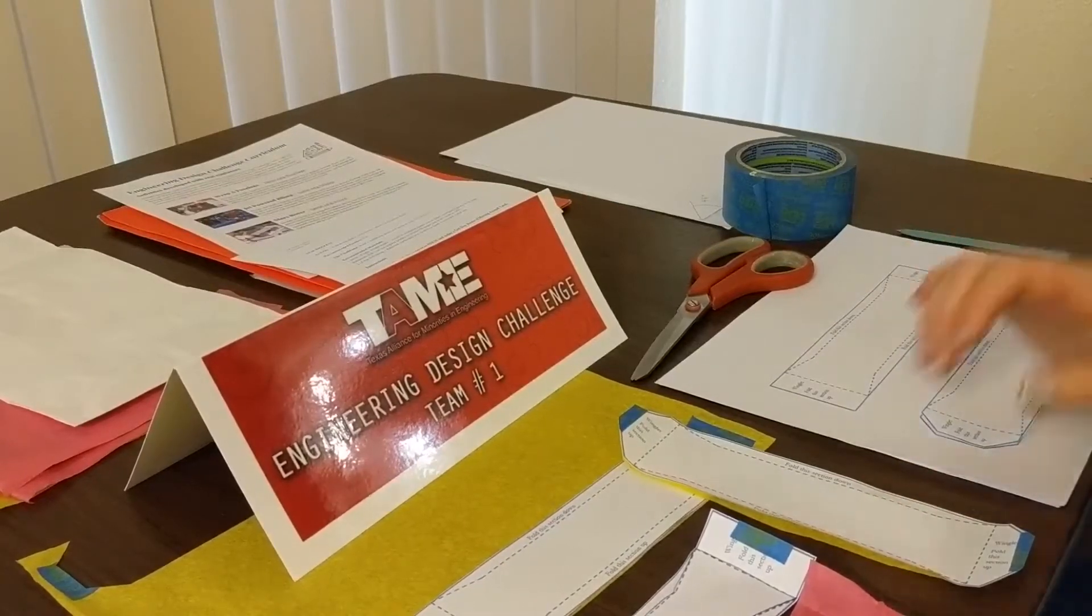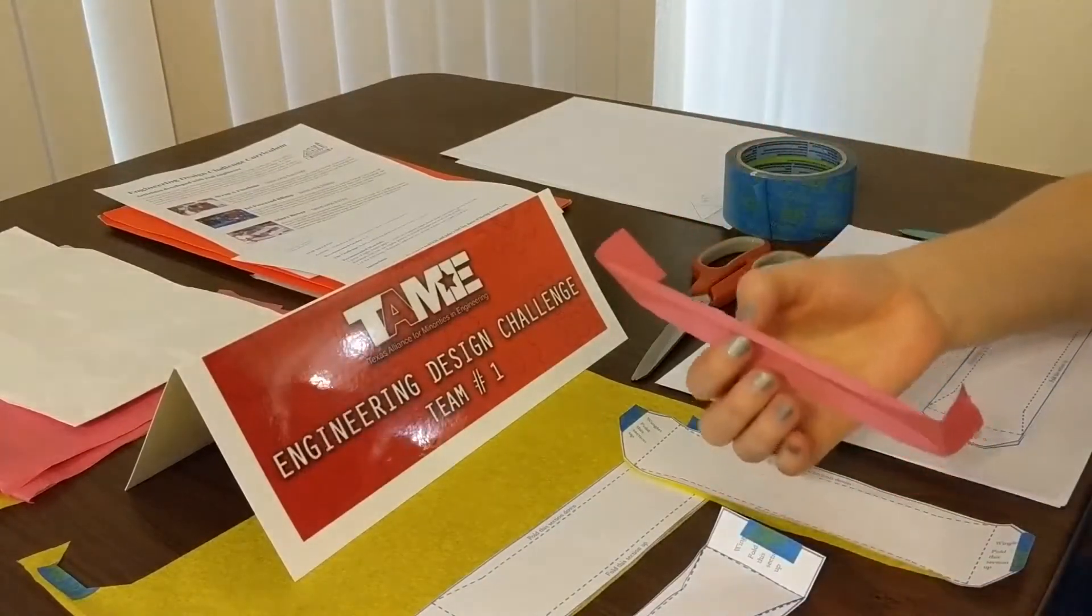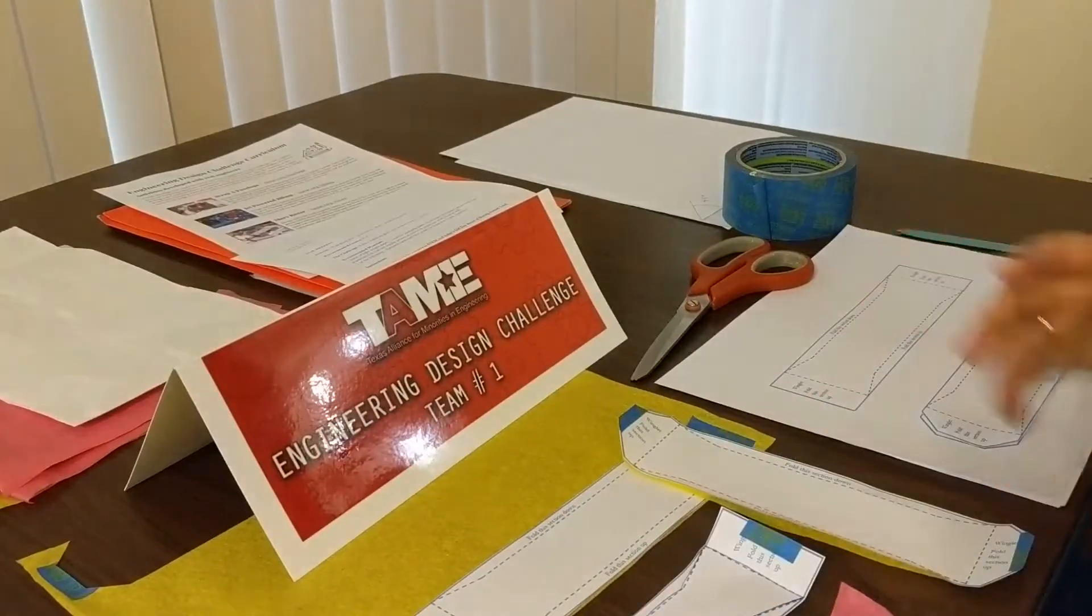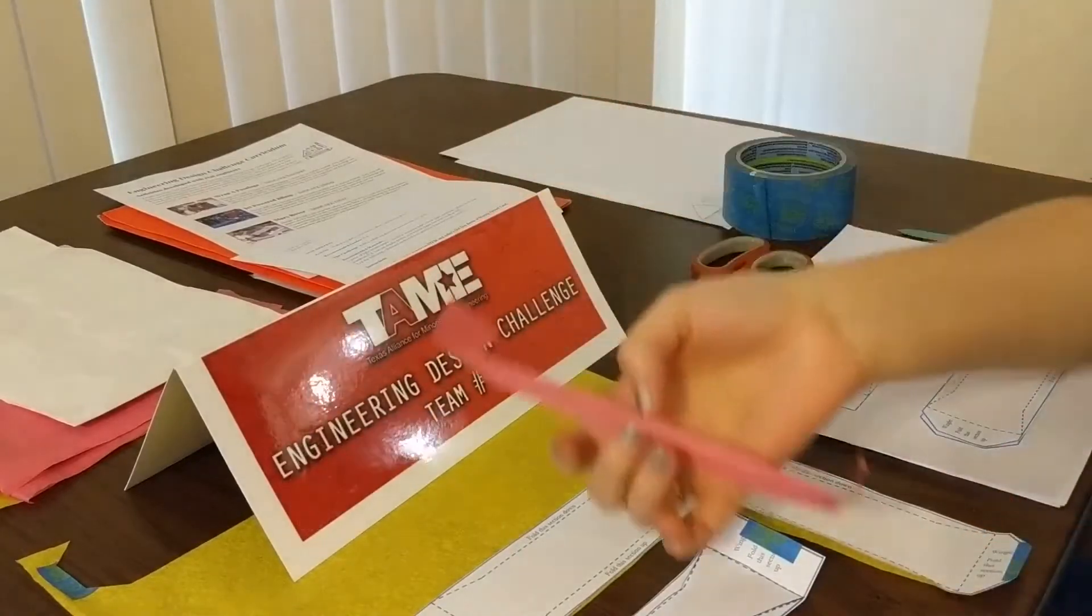So today we are going to build a walk-along glider, sometimes called a tumblewing glider. This activity is aimed at grades K through 8, and the challenge is to build your own walk-along glider and to see how long you can fly it.